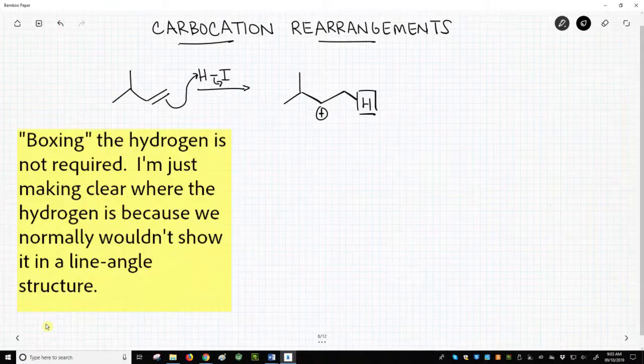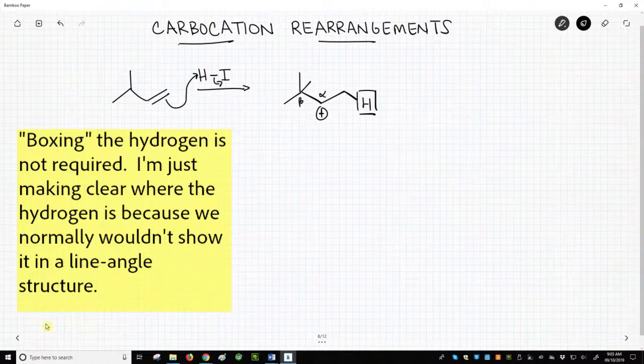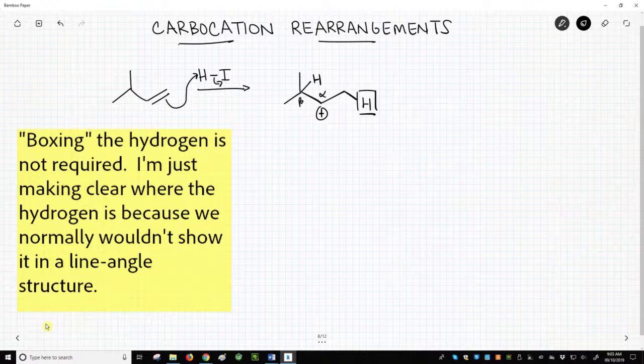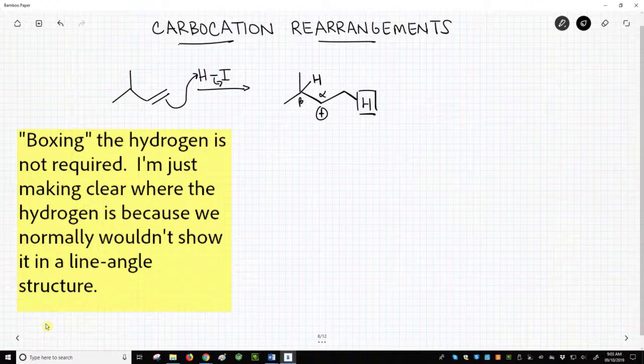This particular carbocation has a neighboring beta hydrogen that can hop over with its electrons in a hydride shift to give an even more stable tertiary carbocation.